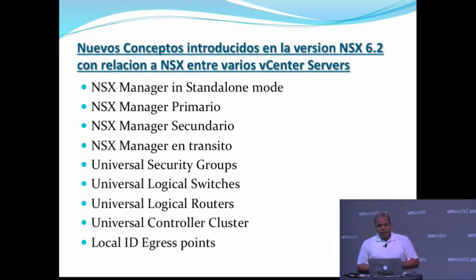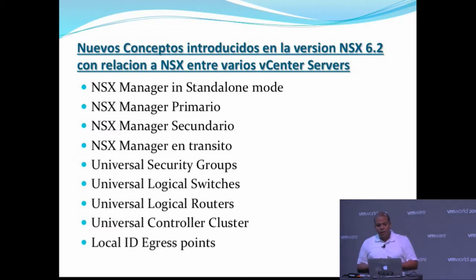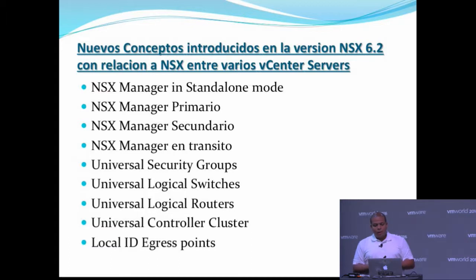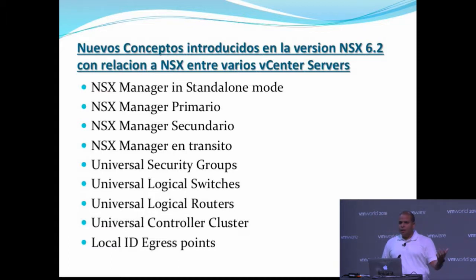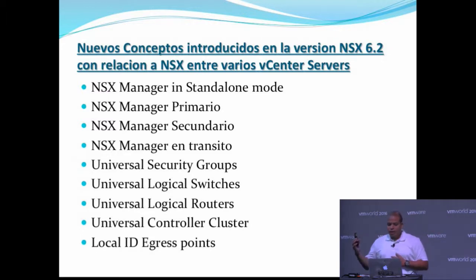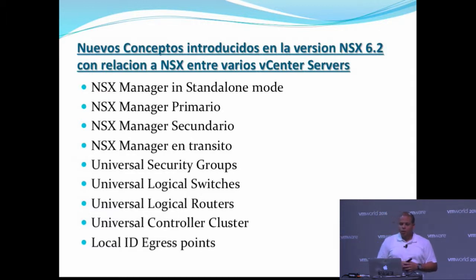We also have what is called Local ID Ingress Points. When you implement a Universal Logical Switch that expands from one data center to another, you can dictate that all machines in data center A that go to the internet use data center A, and if they are in data center B, they use data center B. Before, in versions like 6.0 and 6.1, this was not possible to do.